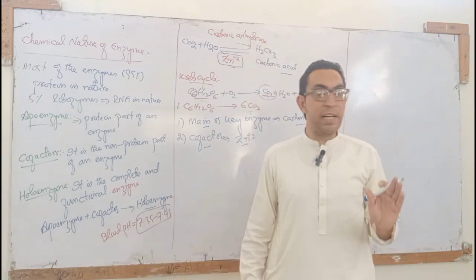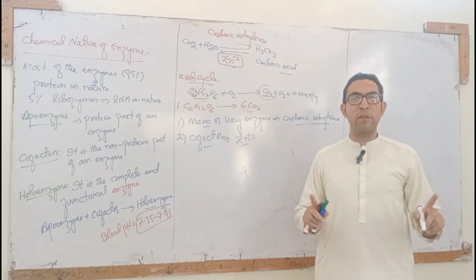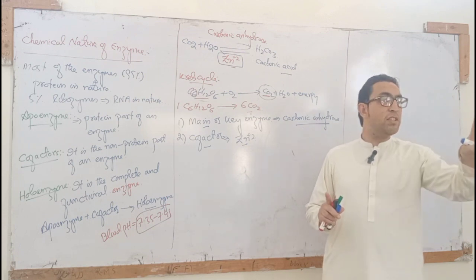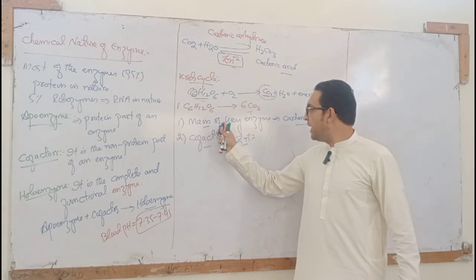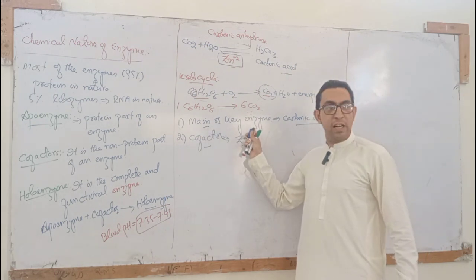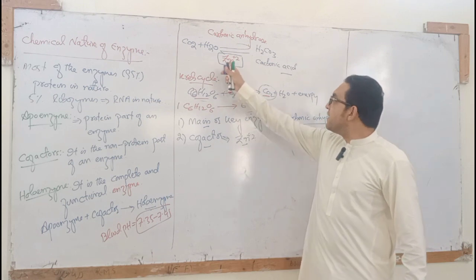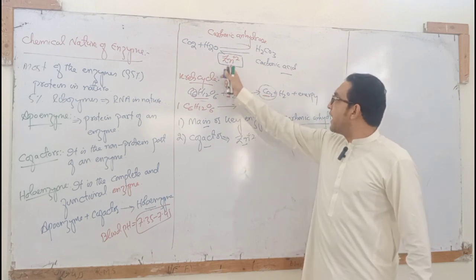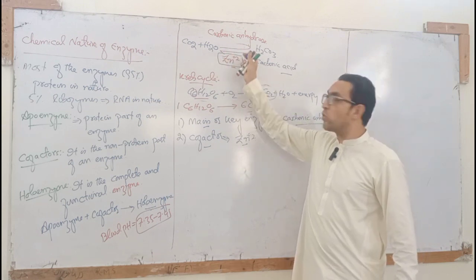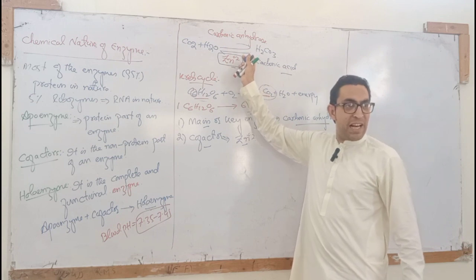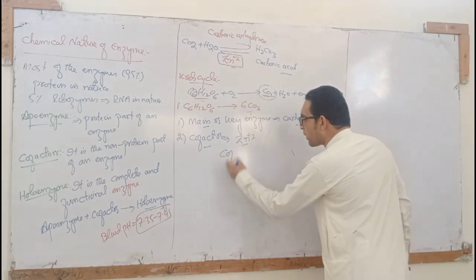If zinc does not exist, the reaction cannot be catalyzed. This confirms that for every enzymatic reaction, two things are needed: the main enzyme and the cofactor. Zinc as a cofactor allows carbonic anhydrase to catalyze the conversion of CO2 and water to carbonic acid.